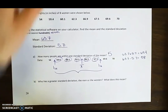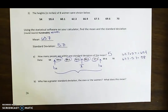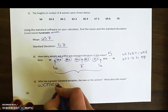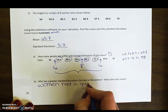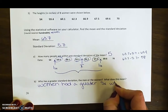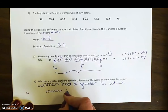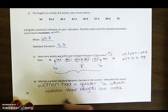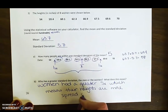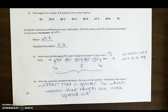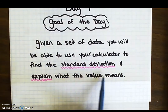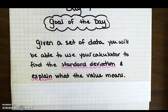Our last question: who has the greater standard deviation, the men or the women, and what does this mean? The men's standard deviation was 1.6 and the women's was 5.7. The women had a greater standard deviation, which means their heights are more spread out. Our goal for today was: given a set of data, use your calculator to find the standard deviation and explain what the value means. Hopefully we've accomplished that goal. Have a great one — see you tomorrow.